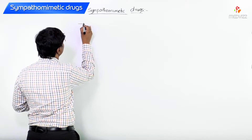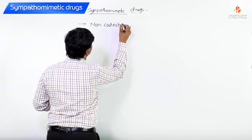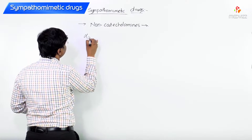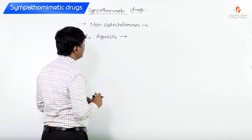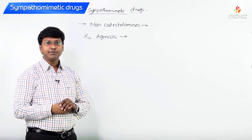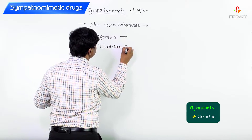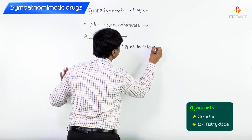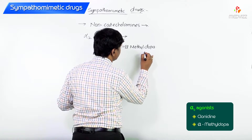Let me discuss some more non-catecholamines. The other non-catecholamines are the alpha-2 agonists. I have given you examples of alpha-1 agonists used as nasal decongestants. Now let me tell you about the alpha-2 agonists. We have two important alpha-2 agonists: clonidine and methyldopa. Remember, methyldopa is a prodrug.